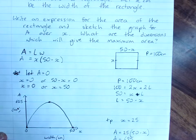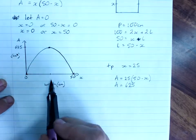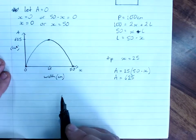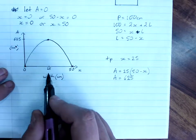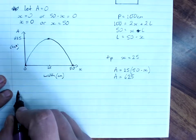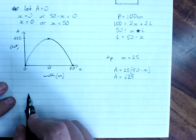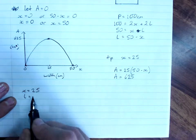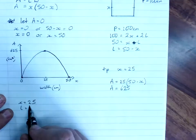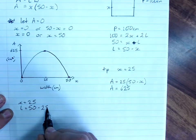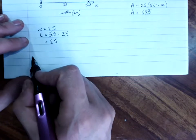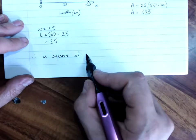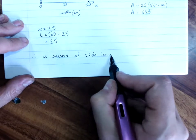And now your final question is, what are the dimensions which will give the maximum area? So, you can see that it's 25 and 25, but we technically only have the x. So, if x is 25, length, go back to our length formula, is 50 minus 25, which equals 25.